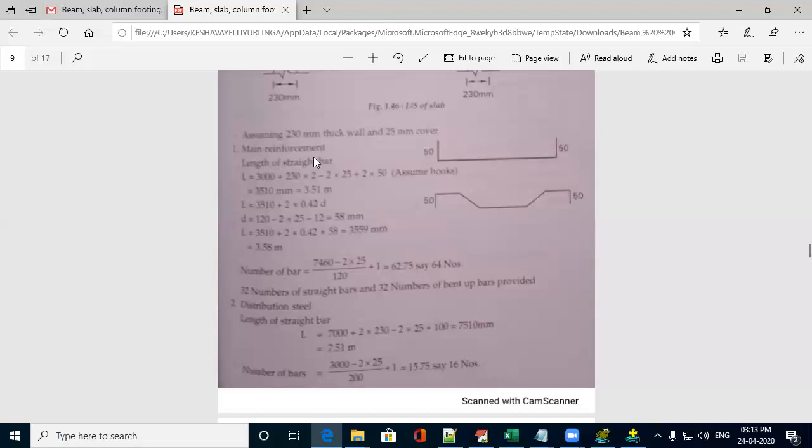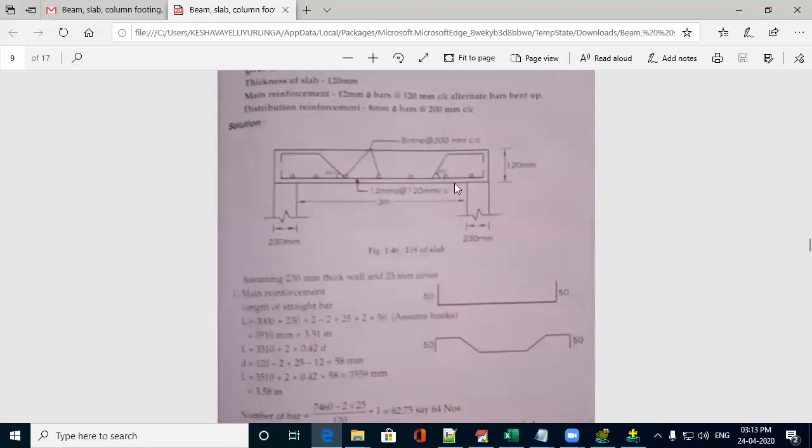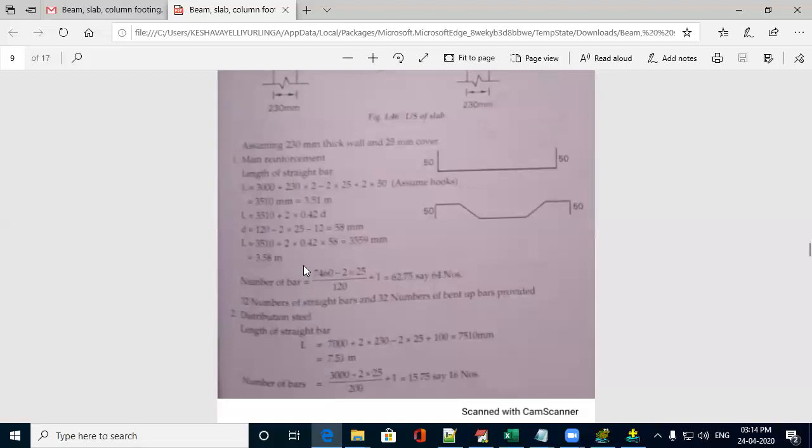For that, we can observe here, the main reinforcement will be in a shorter span. We need to calculate the number of span. This is projected in this direction, in the 7 meter direction. So, to calculate the number of such bars, we need to take the dimension along the longer direction. That is 7 meter.